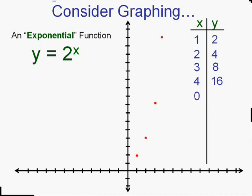Let's go the other way. If we put in a 0, 2 to the 0 power. Remember about exponents. Anything to the 0 power is 1. Okay, so we have the point 0, 1.